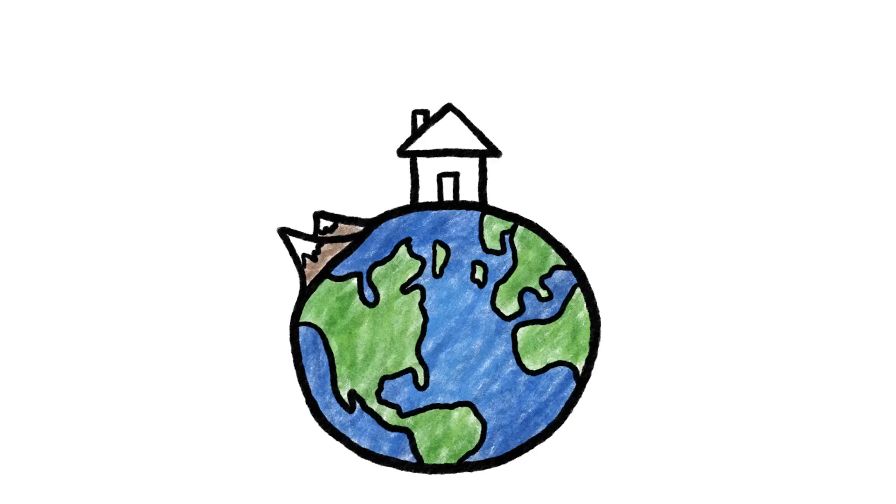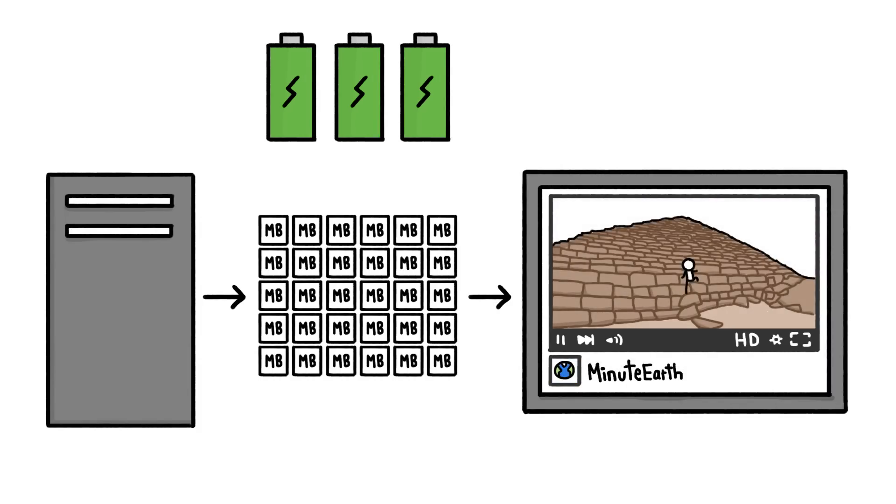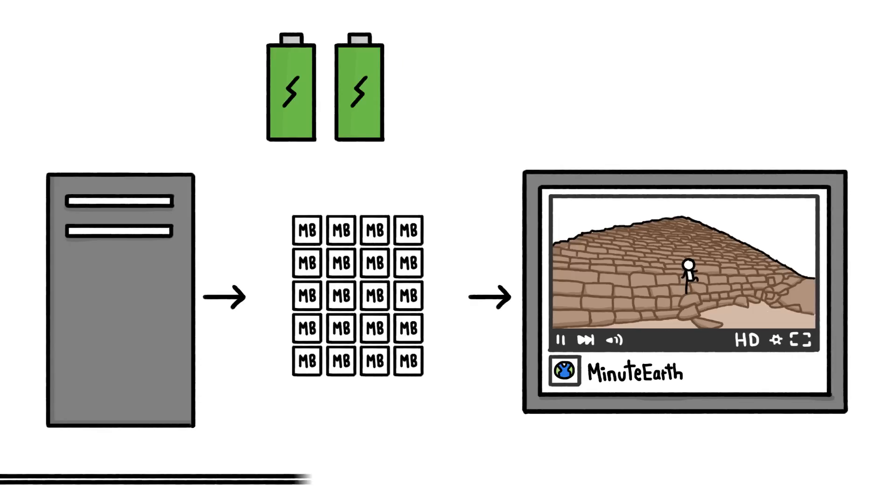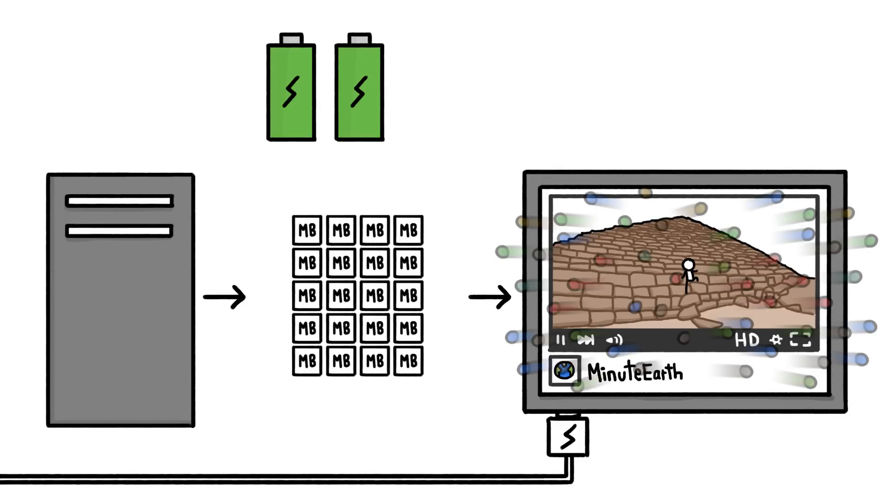MinuteEarth actually has it better, because stick figures are awesome conservers of energy. Videos with simple visuals can be stored as smaller files and transferred much more efficiently, so our videos only drain about two batteries. Add in the energy your device uses to display the video, and the grand total is somewhere between two and two and a half batteries per view.